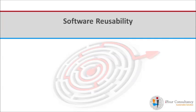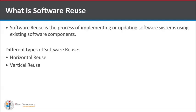In this session, we will be learning about how software usability benefits an organization and the challenges that can be faced in implementing them. Software reuse can be defined as the process of implementing or updating software systems using existing software components. It is mainly of two types: horizontal and vertical reuse.